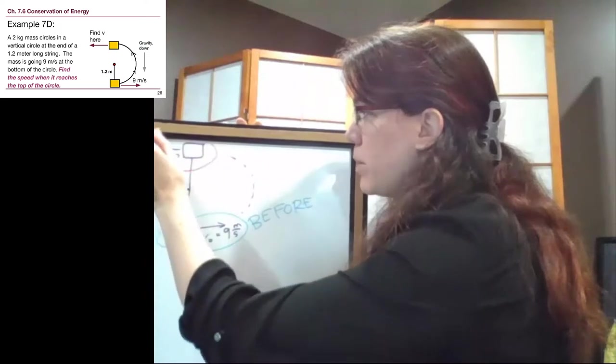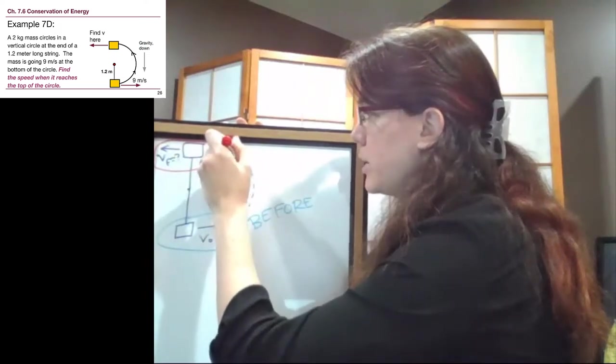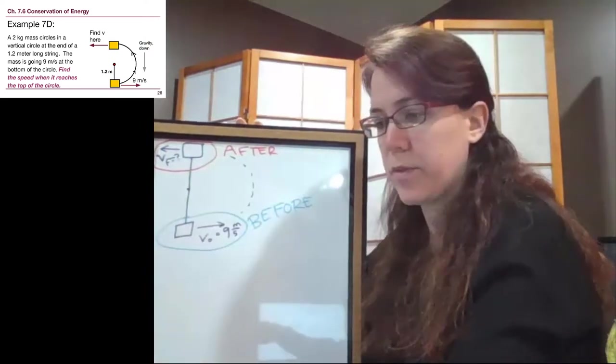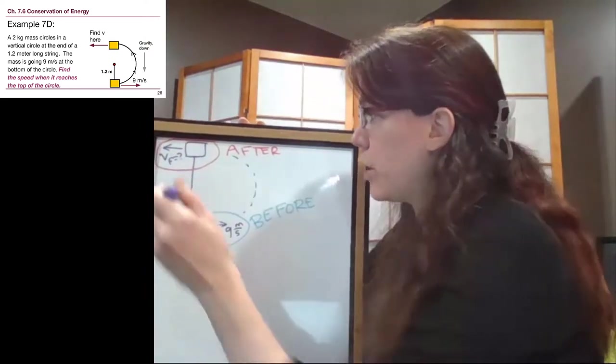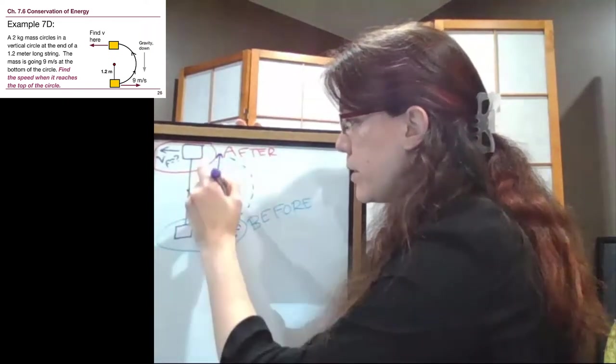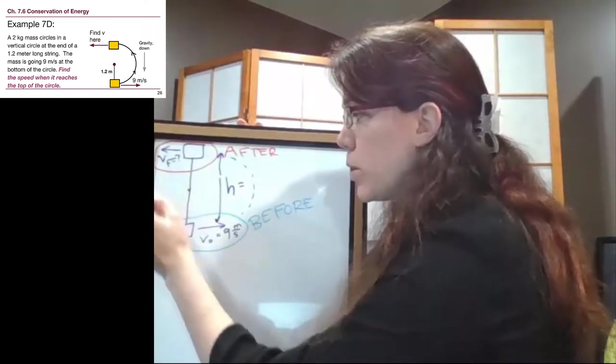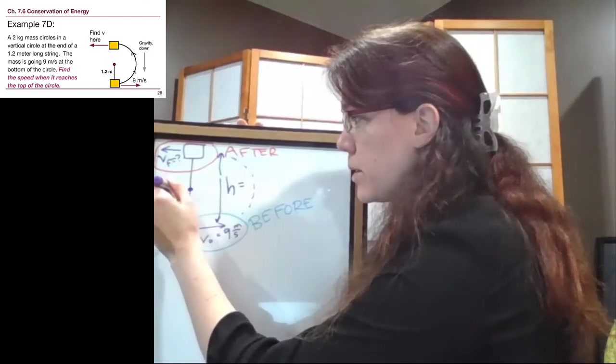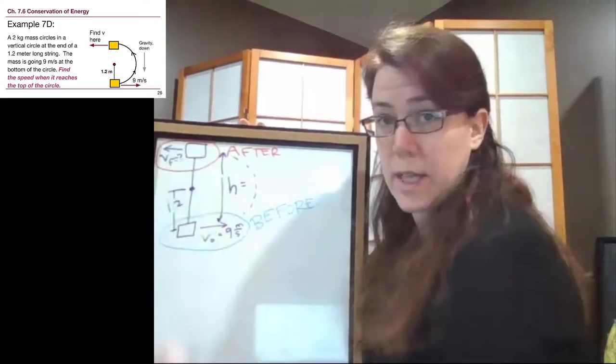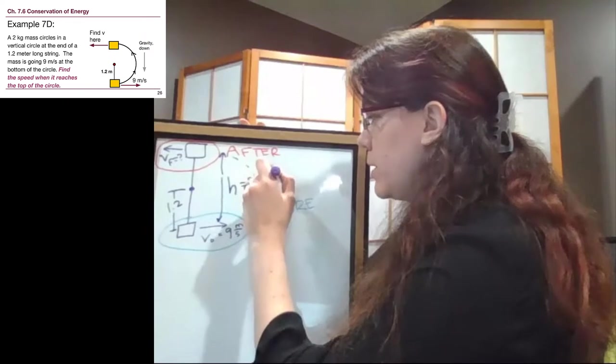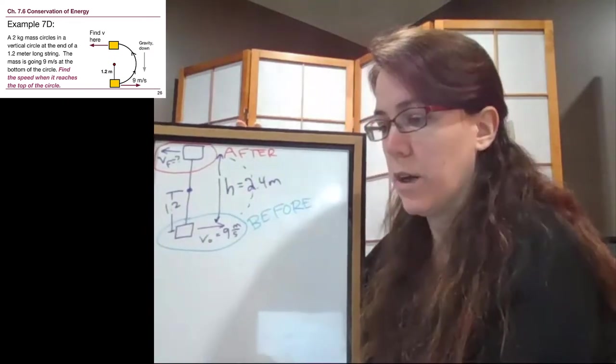that's here at the top of the picture. Now, a couple of key things. First of all, the overall height difference between before and after, that height difference is not just the 1.2 from the center out, but it's twice that. It's the diameter of the circle, or 2.4 meters. All right.